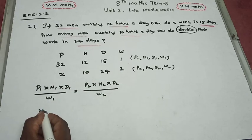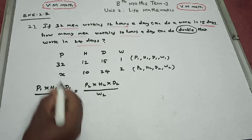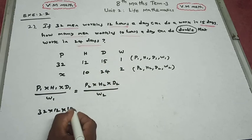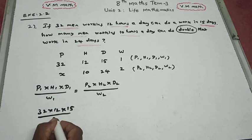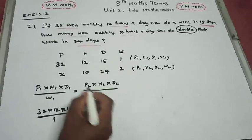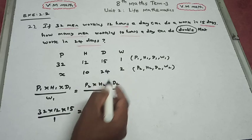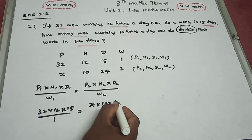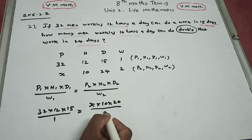So 32 into 12 - this is P1 into H1 - into D1, 15, divided by work W1, which is 1. So this is P2 into H2 into D2: x into 10 into 24 divided by work W2, which is 2.